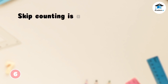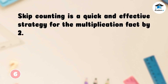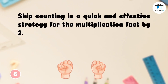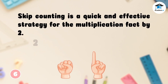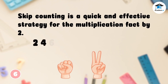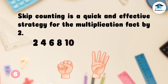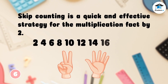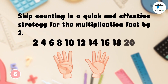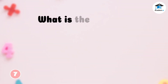Skip counting is a quick and effective strategy for the multiplication fact by 2. Let's do skip counting — ready? 2, 4, 6, 8, 10, 12, 14, 16, 18, 20, and so on. What is the answer?